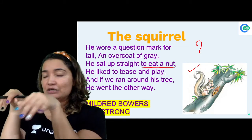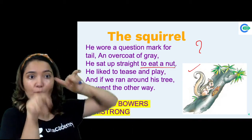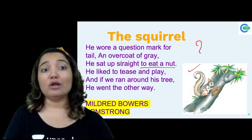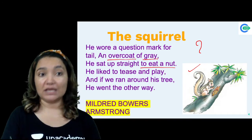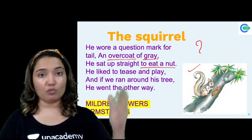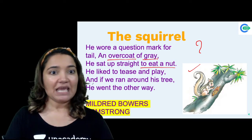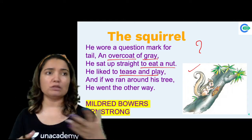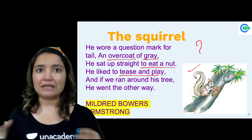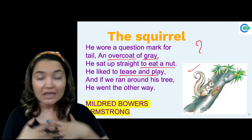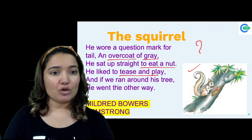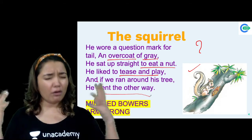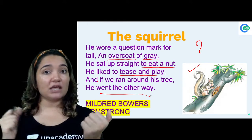It just sits very straight with its hands like this — it's very, very cute. Its tail curled in the form of a question mark behind it, and its gray overcoat — what the poet calls an overcoat. He sat up straight to eat a nut. He likes to tease and play — the squirrel will go this way, then that way, entertaining you in some or the other way. You'll just love to observe a squirrel. And if you ran around the tree, he went the other way — the squirrel is very, very shy.